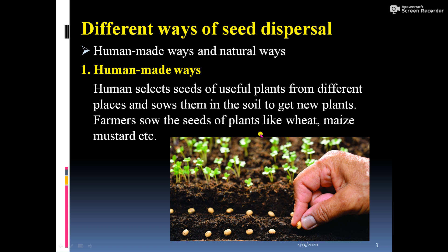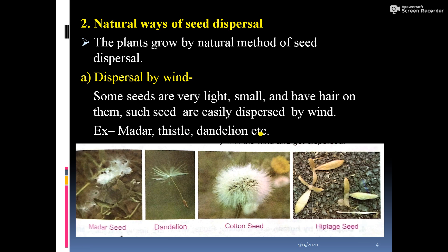The next is the natural way of seed dispersal. Plants grow by natural methods of seed dispersal, and there are many types in this category.